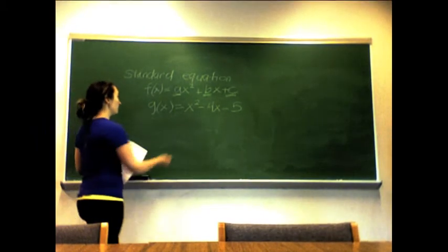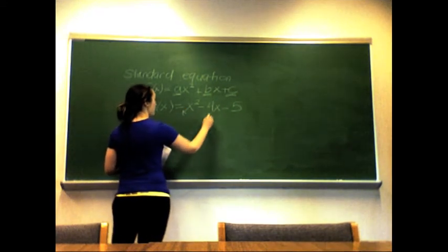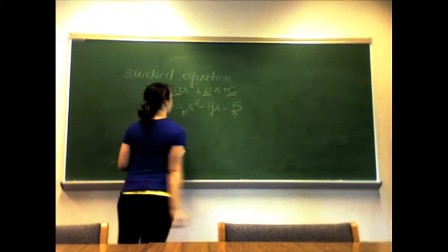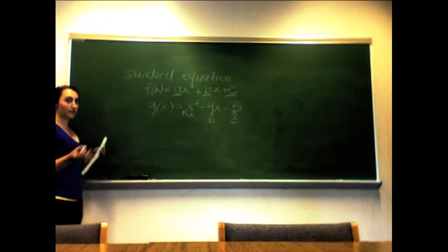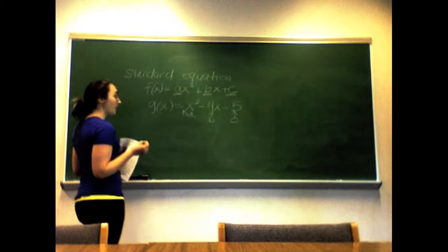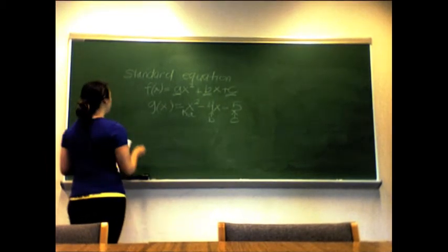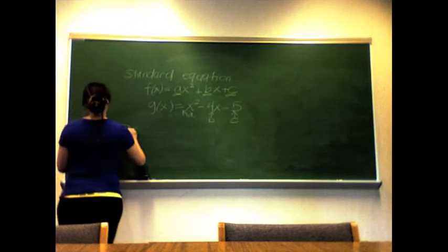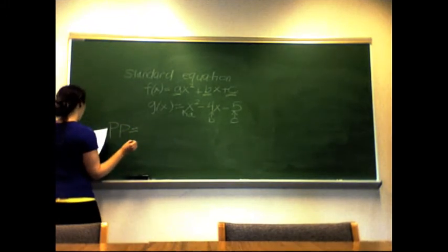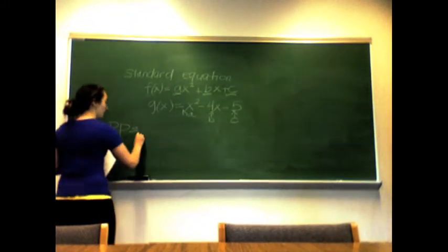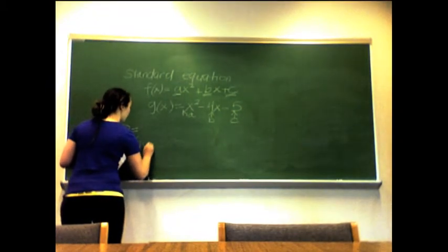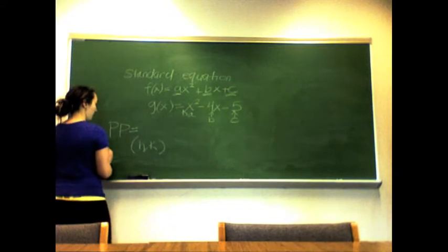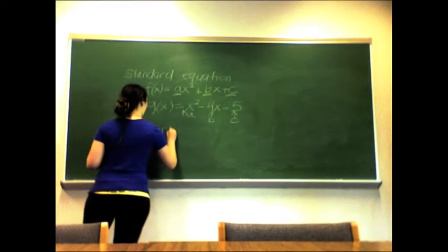Now we just need to locate our a, b, and c. First we need to find the properties of a parabola, and this will help us. The properties of a parabola tell us that our vertex is equal to (h, k).